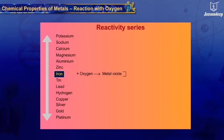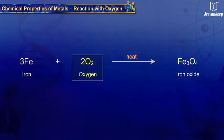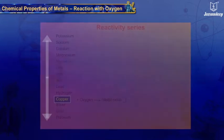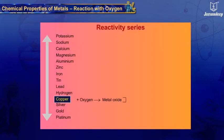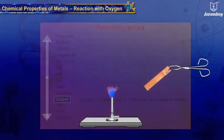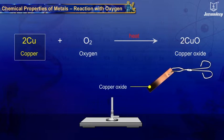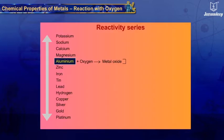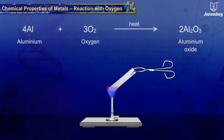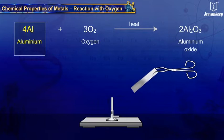Iron reacts with air vigorously only when iron filings are sprinkled in the flame of a burner. Copper does not burn, but on heating, the hot metal is coated with a black layer of copper oxide. On strong heating, aluminum gets coated with a layer of aluminum oxide.